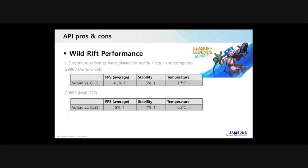To give an example of how this looks in practice, here are some results from work Samsung did on Wild Rift. As you can see, Vulkan achieves higher FPS and lower temperatures than OpenGL ES simultaneously, allowing for smoother gameplay with lower power consumption.